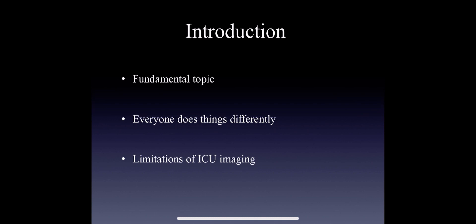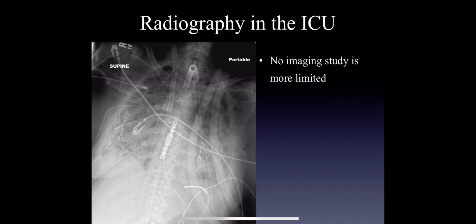There is perhaps no more limited study in radiology than chest X-rays in the ICU, and it's so important to keep that in mind when interpreting these cases. So focus on the big picture, not the small details. I'm going to present you with a checklist of things which I think are really important that you should look at on every case. No imaging study is more limited than the chest radiology ICU film. It's limited by rotation, level of inspiration, positioning of the patient, centering of the film, penetration, the amount of X-ray dose the patient gets, etc.